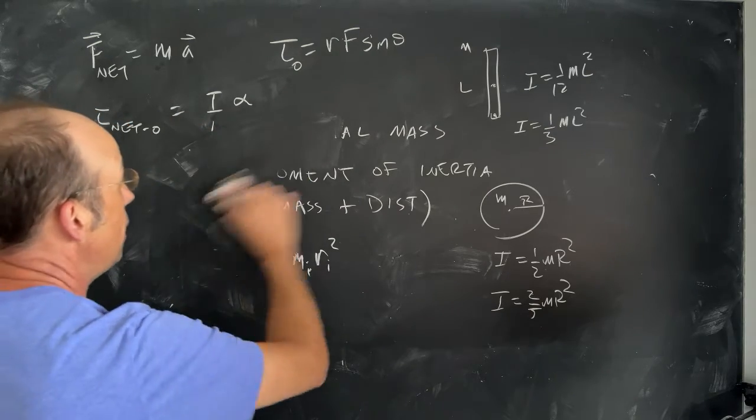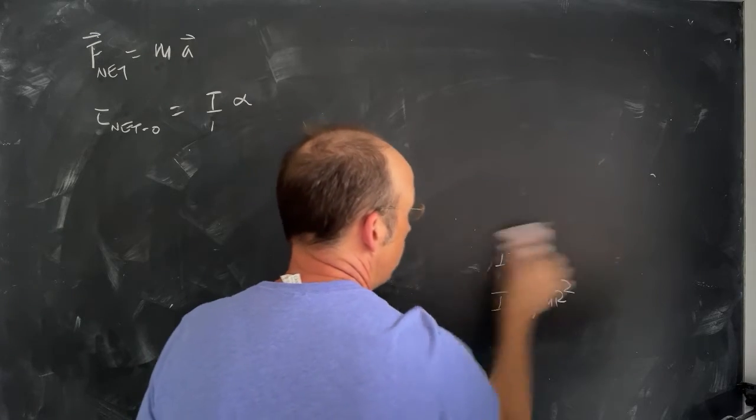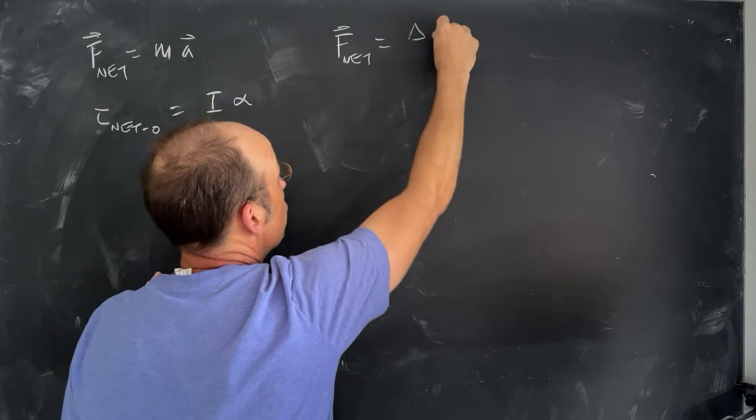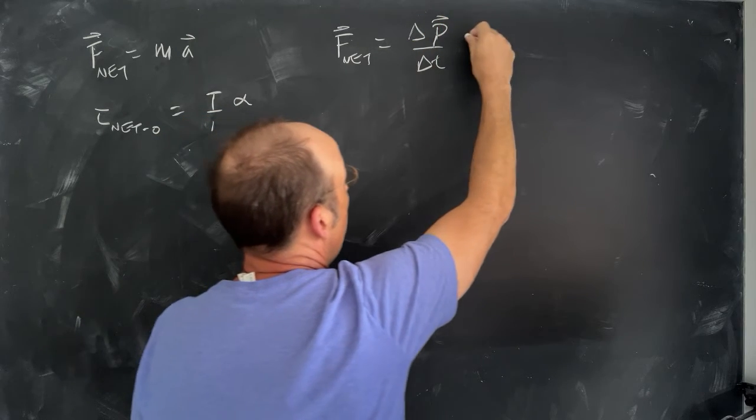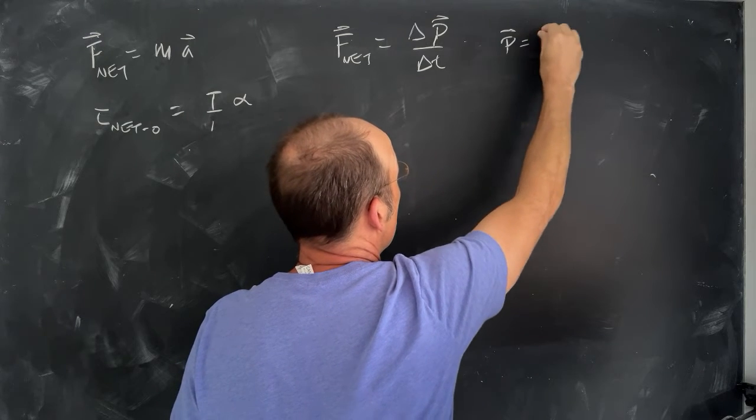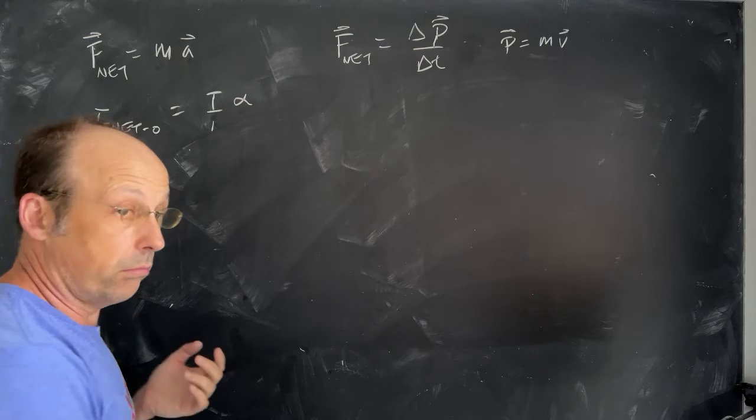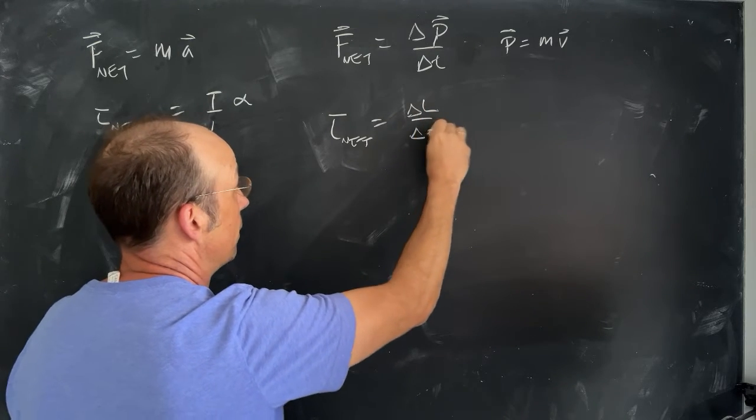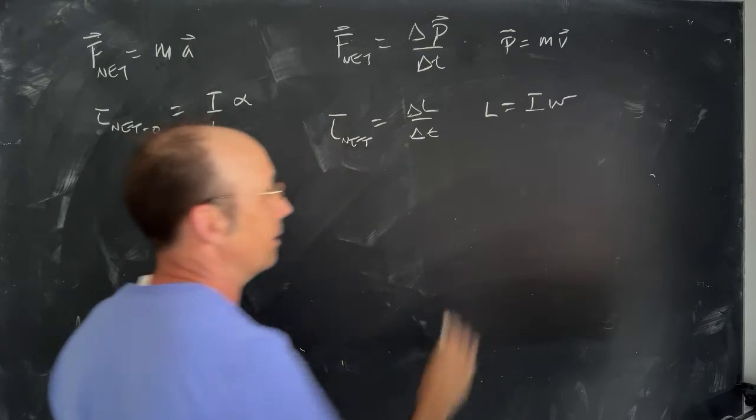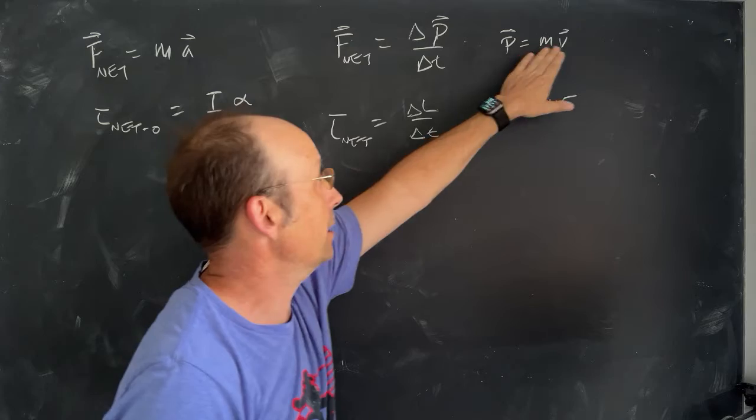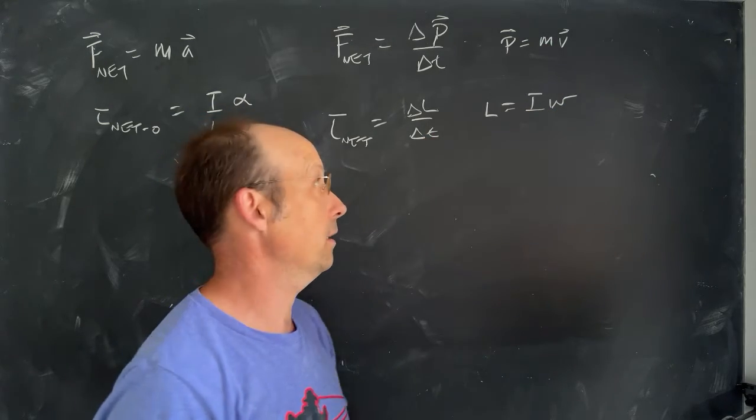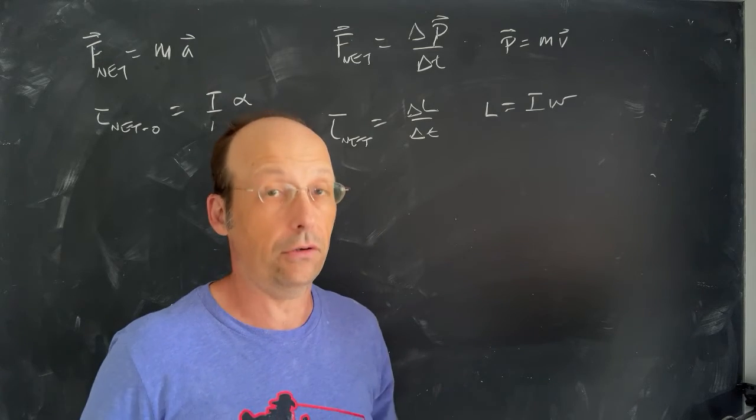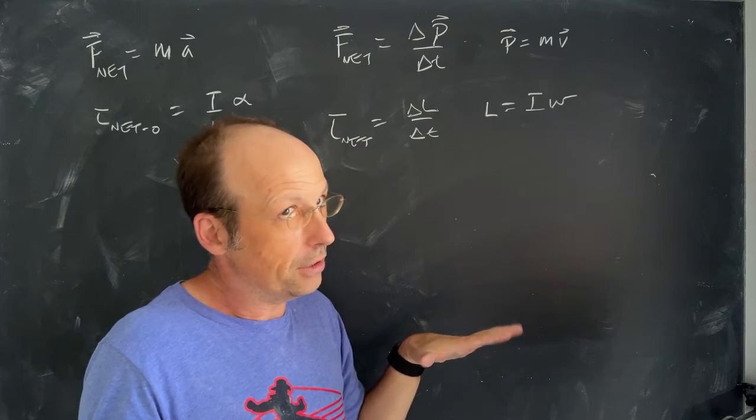Remember that we had another way of looking at changes in motion. We could say Fnet is the change in momentum with respect to time. And momentum was mass times velocity. Well, surprise, torque net is equal to the change in angular momentum with respect to time, where the angular momentum is I times omega. So you see how it all looks the same? Mass times velocity. Rotational mass times rotational velocity. And now, technically, L, angular momentum, is a vector. But in most algebra-based courses, they kind of flatten it out into two dimensions so you don't have to worry about that.